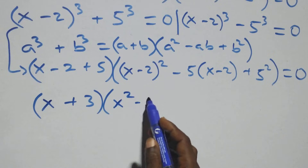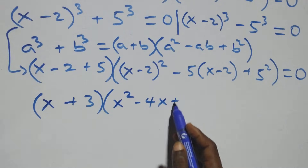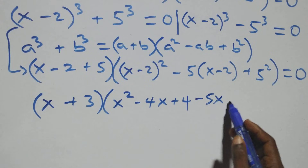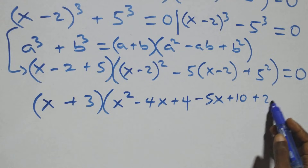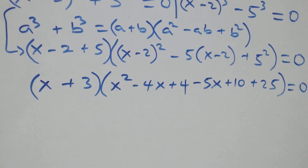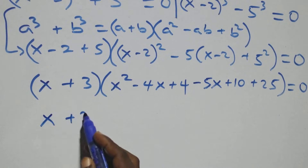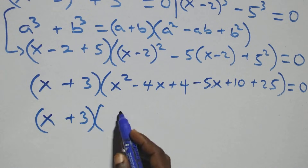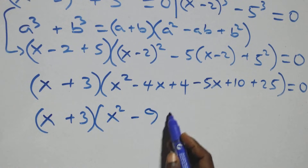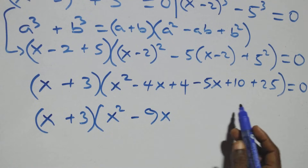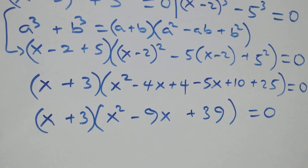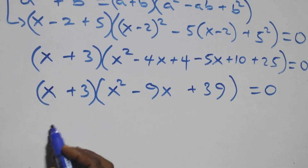Expanding the second bracket: (x-2)² gives x² minus 4x plus 4, then minus 5 times (x-2) gives minus 5x plus 10, and plus 5² gives plus 25. Combining terms: x² minus 9x, and 4 plus 10 plus 25 equals 39. So we have (x+3)(x² minus 9x plus 39) equals 0.